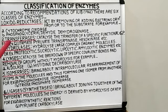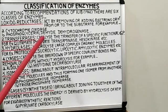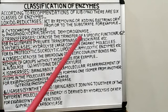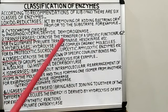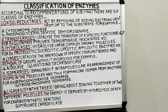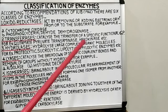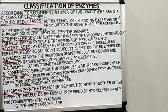The second class includes transferases. These enzymes catalyze the transfer of specific functional groups. For example, glutamate pyruvate transaminase transfers an amino group from glutamate to pyruvate. Likewise, hexokinase transfers the phosphate group from ATP to glucose.